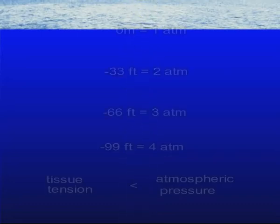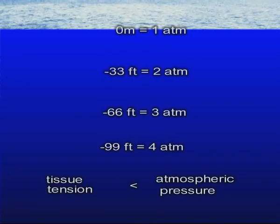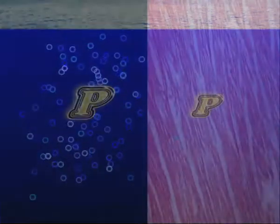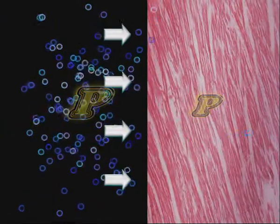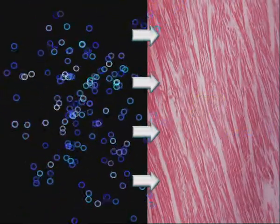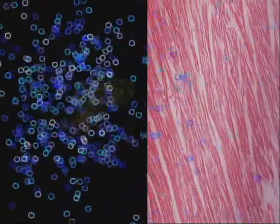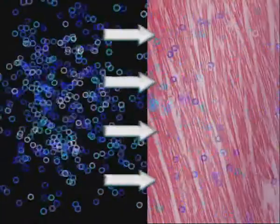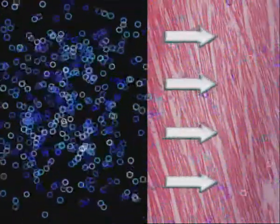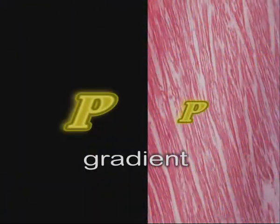Descending during a dive, the ambient pressure increases on the order of one atmosphere every 33 feet. But the tissue tension is lower, and according to Henry's law, tissues absorb gas. This absorption increases as much as the difference between ambient pressure and the tension of the gas in the tissue increases. This difference is called gradient.